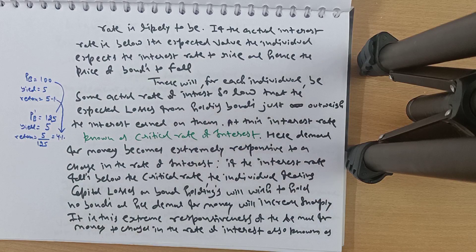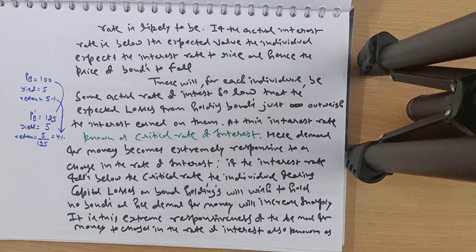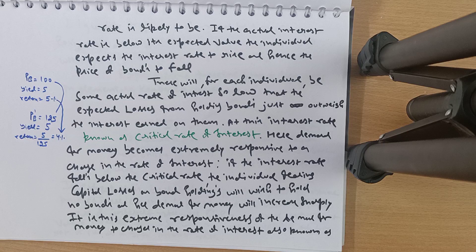For each individual there will be an actual rate of interest so low that the expected losses from holding bonds just outweigh the interest earned on them. At this critical rate of interest, demand for money becomes extremely responsive to changes in the rate of interest. If the interest rate falls below the critical rate, individuals fearing capital losses will wish to hold no bonds, and demand for money will increase sharply — this is the liquidity trap.